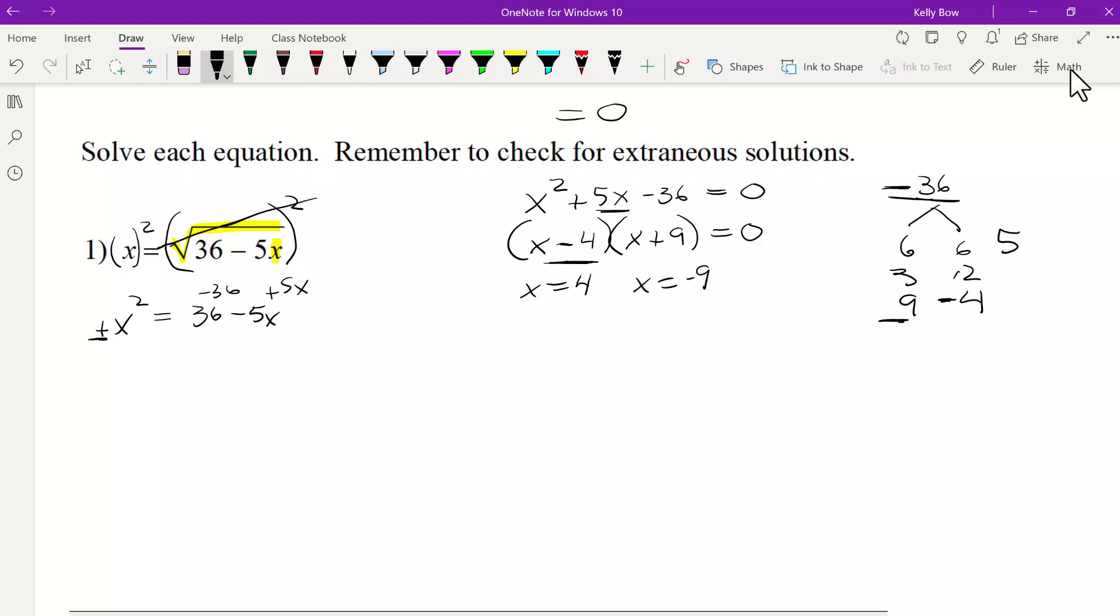So those are your two possibilities, and now we go back and check. So we have x is equal to the square root of 36 minus 5x. So let's try 4. So 4 is equal to the square root of 36 minus 5 times 4. Well, 5 times 4 is 20. 36 subtract 20 is 16. Is the square root of 16, 4? Yes.